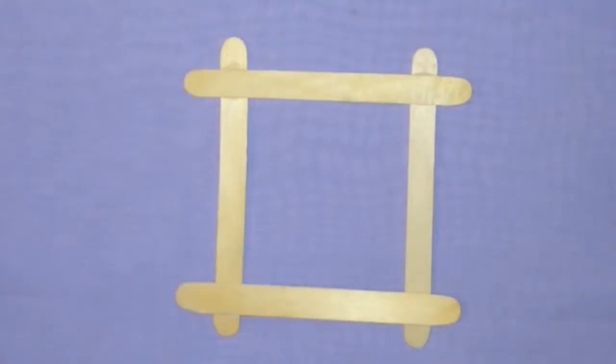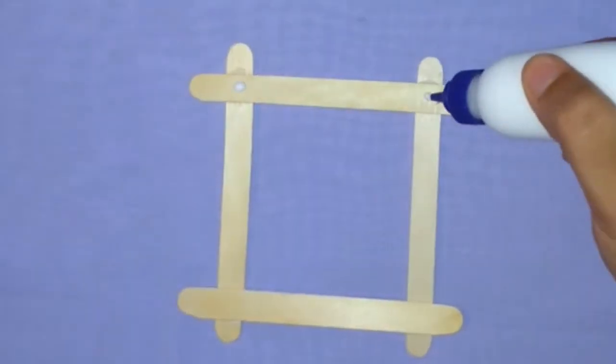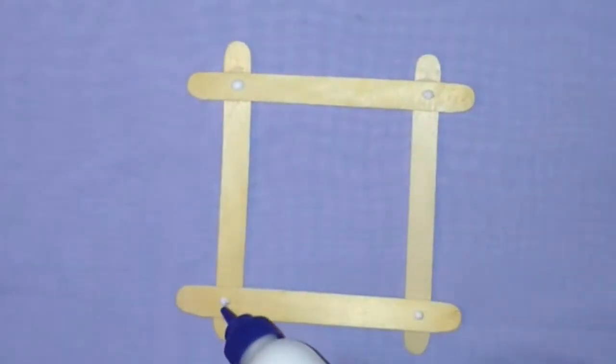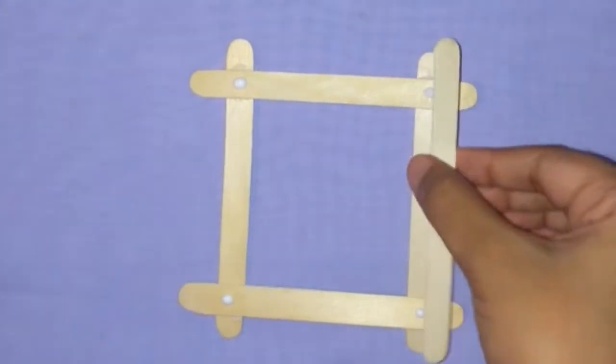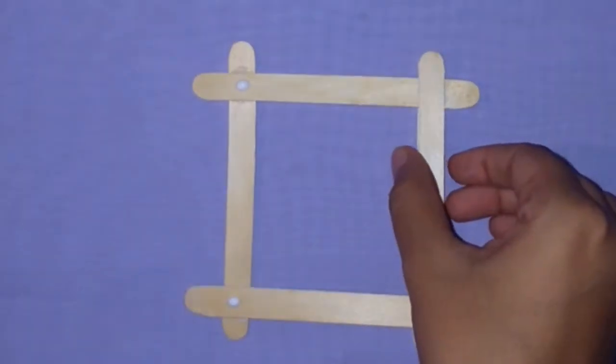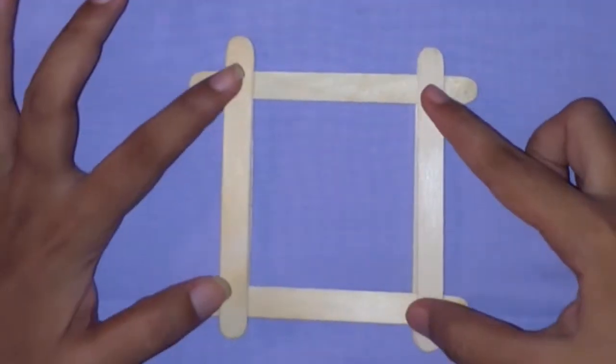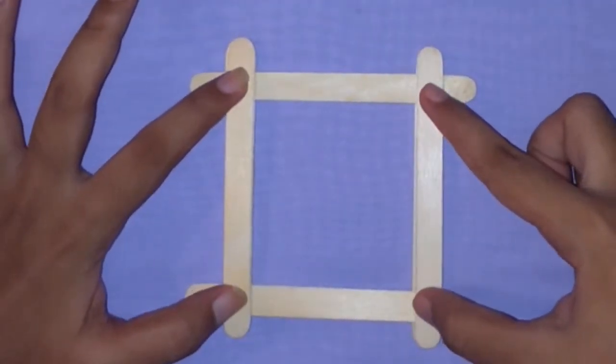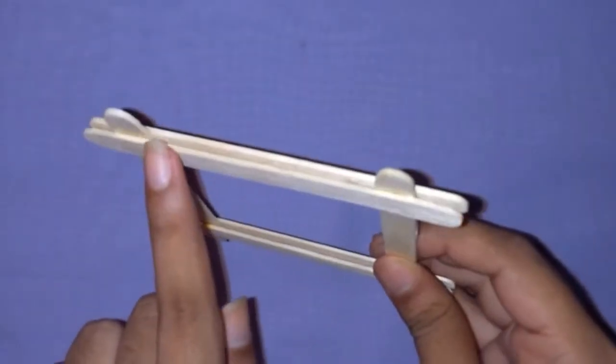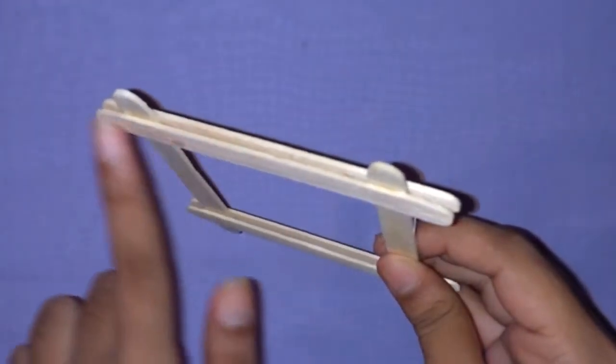Once this is done, again take glue, put it on the same four points and attach two more candy sticks to it. We require six candy sticks for one photo frame. The reason we do this is it's going to form a slit through which we can insert a photo and that will not fall off the frame.